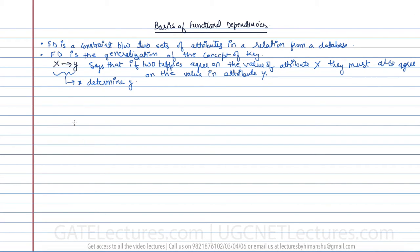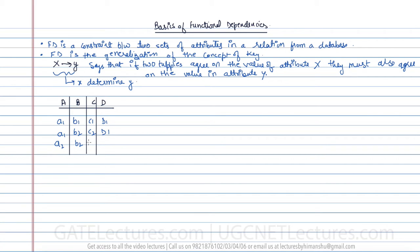For example, let's take a simple relation with four attributes A, B, C, and D, having the following values: A1 B1 C1 D1, A1 B2 C2 D1, A2 B2 C1 D2, A3 B3 C2 D2, A4 B4 C4 D4, and A5 B3 C3 D3.